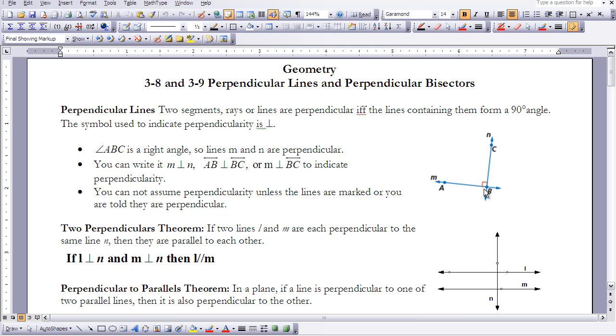We have some theorems coming in this lesson. Two Perpendicular Theorem is the first one. It says if two lines, L and M, are each perpendicular to the same line, then they are parallel to each other. If L is perpendicular to N and M is perpendicular to N, these happen to be corresponding angles, so I know that L and M are parallel to each other. There's the two-perpendicular theorem that just basically says if I have two lines that are perpendicular to the same line, in this case N, then those two lines are parallel to each other.